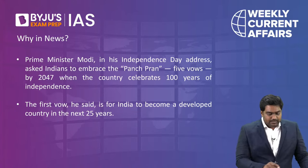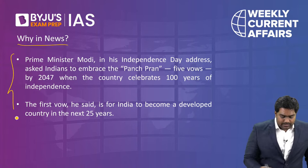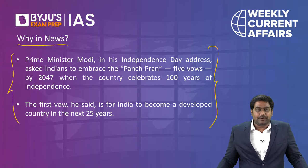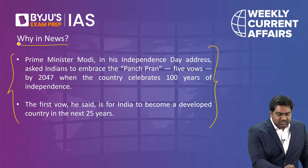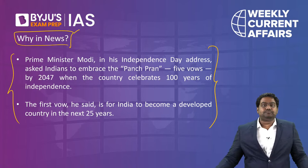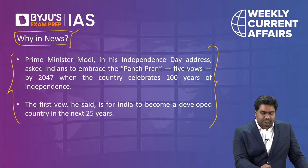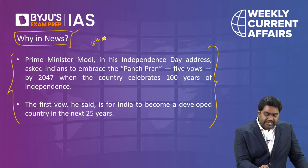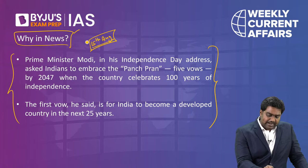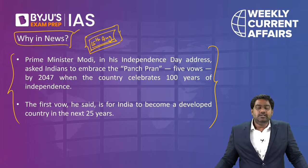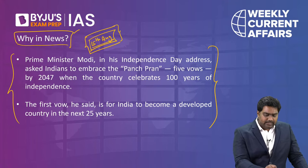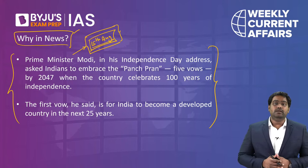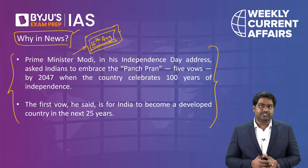Let's start by talking about the goal of making India a developed nation by 2047. Why is this topic in the news? Recently, on the 15th of August, India marked its 76th Independence Day — 75 years of independence — and the government of India had planned a grand initiative to mark this historic event: Azadi ka Amrit Mahotsav.